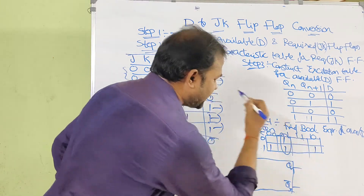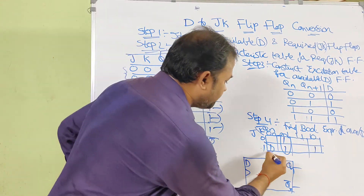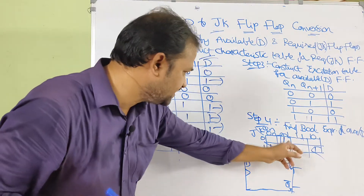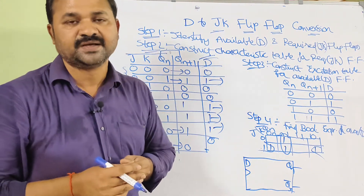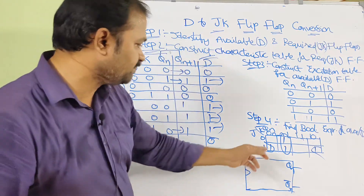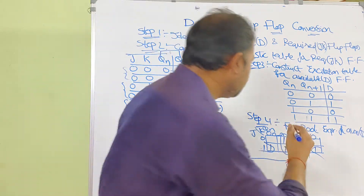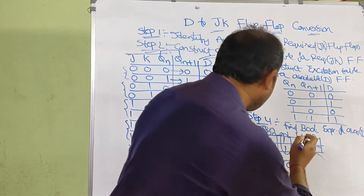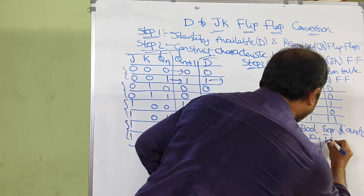We can combine these two cells as a group, and the next two as another group. Observing the first group, J value is changing, so there is no need to consider J. Looking at K and Qn, the values are 0 and 1 — K̄Qn.